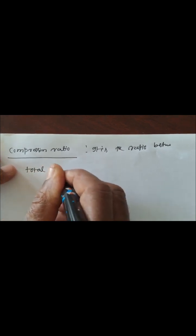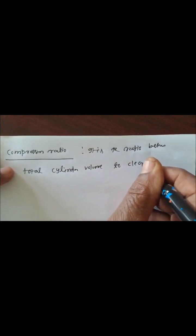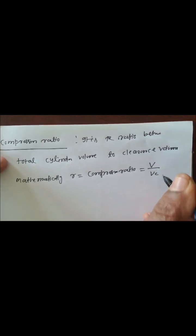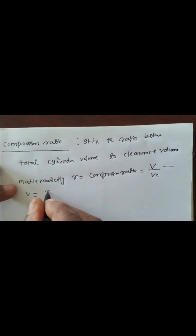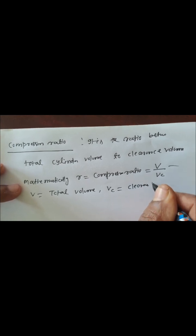What is compression ratio? Compression ratio is the ratio between total cylinder volume to clearance volume. Mathematically, R (compression ratio) is equal to V by Vc, where V is equal to total volume and Vc is equal to clearance volume.